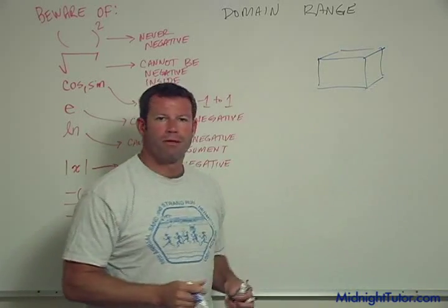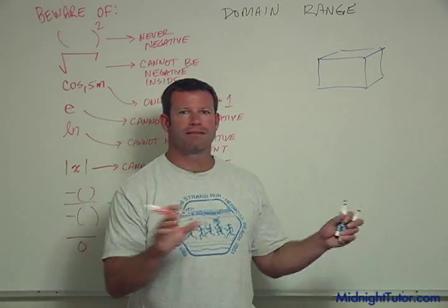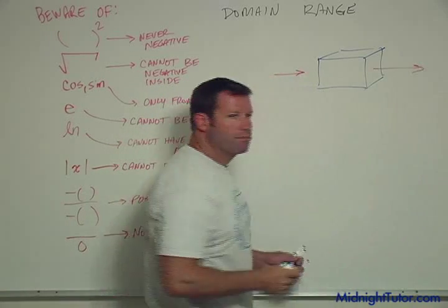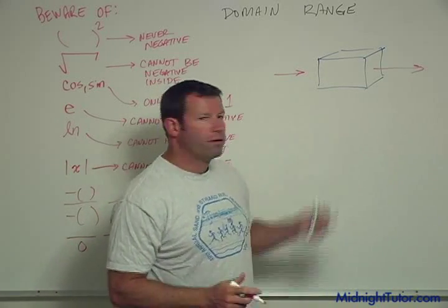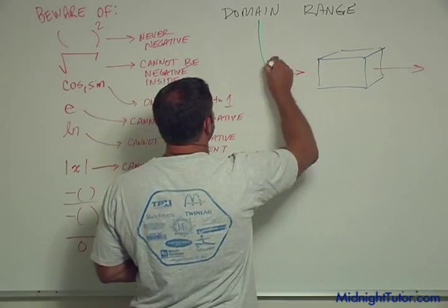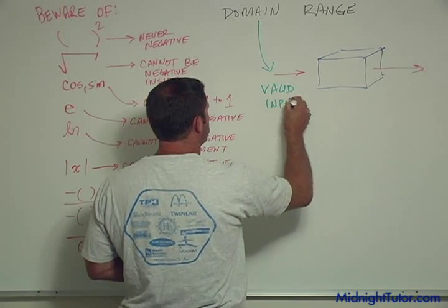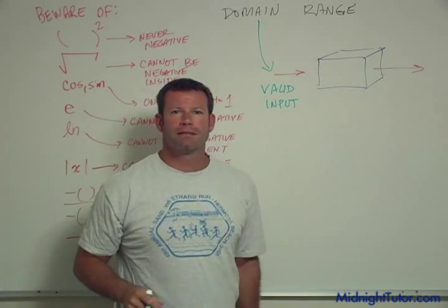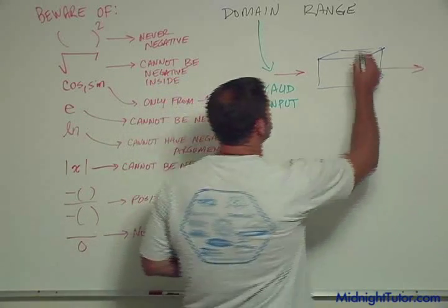Imagine we have some machine. They always call it a black box, like you can't see inside of it. Some machine, something goes in one side, something else comes out the other side. And then the question is, what's a valid input? So, domain then is just anything that's a valid input. Because we don't want to send anything into this machine that's going to break the machine. And then the valid outputs are the range.